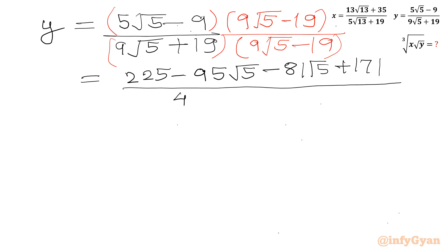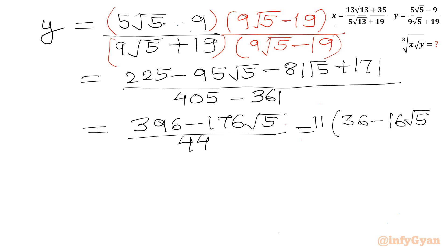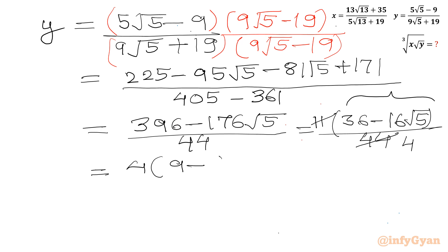The denominator is (9√5)² minus 361. So the numerator will become 396 minus 176√5 over 44. Now from the numerator we can take 11 common, so in the bracket it would be 36 − 16√5. The denominator is 44, so we can cancel 11 and 44, leaving 4. Now from the numerator 4 is also common, so we can write (9 − 4√5) over 4, giving y = 9 − 4√5.